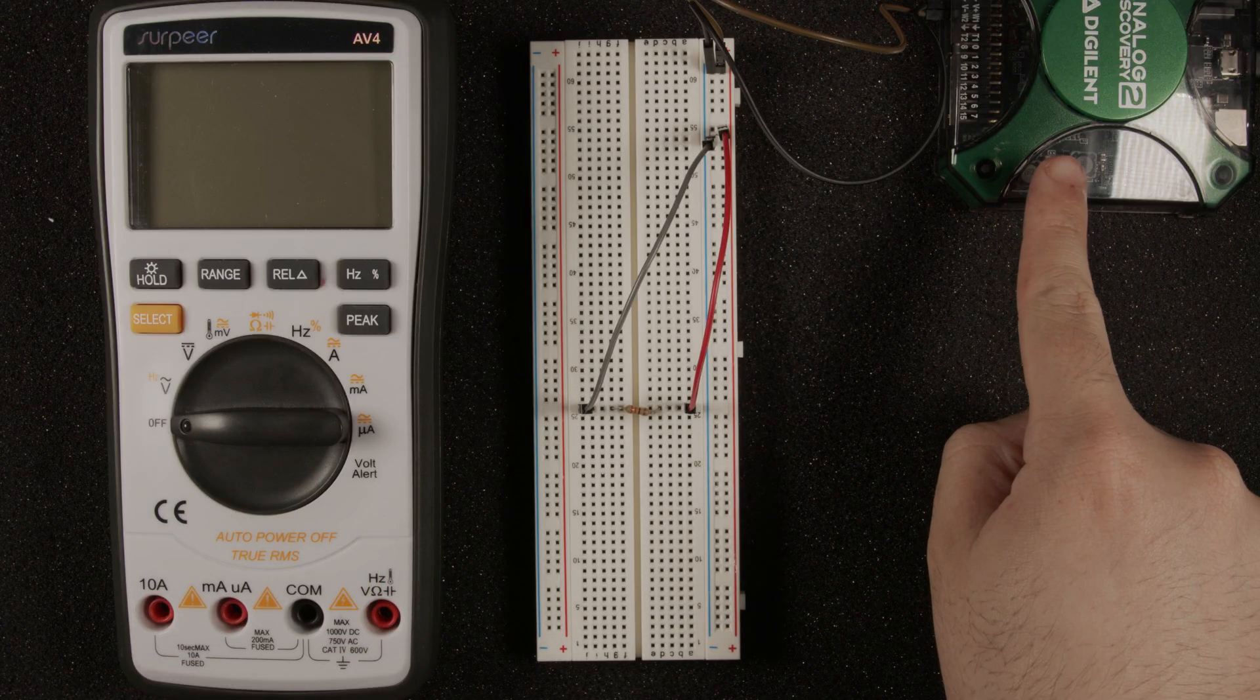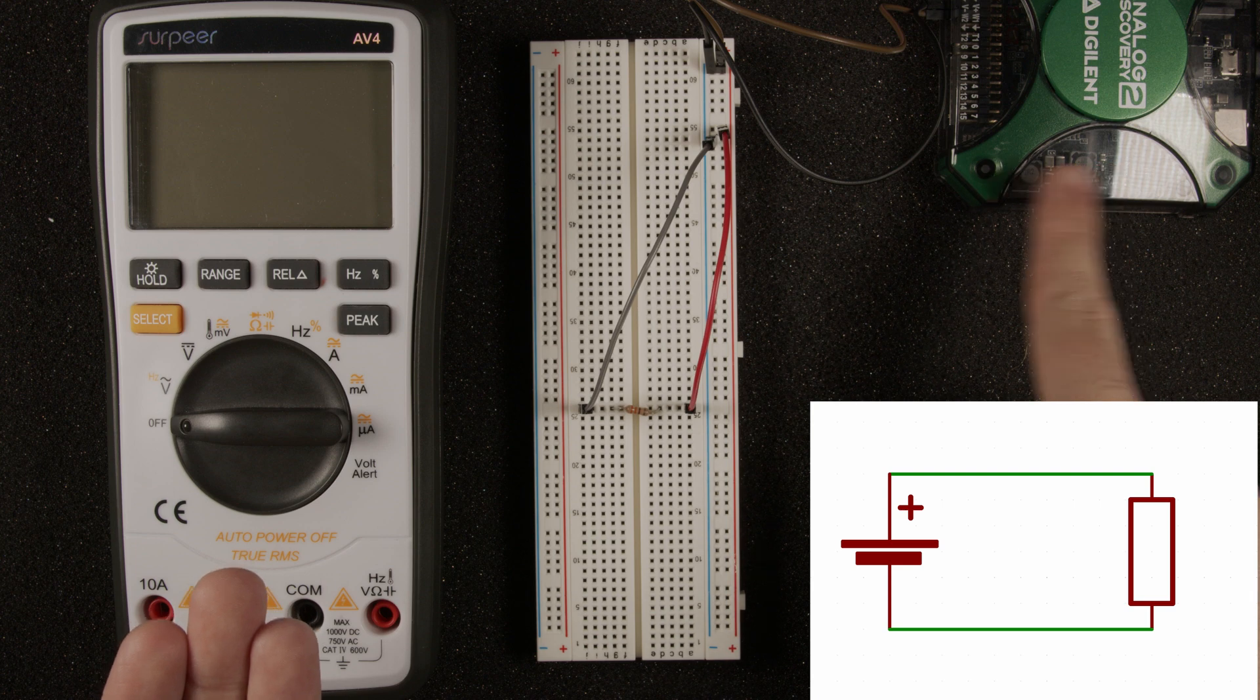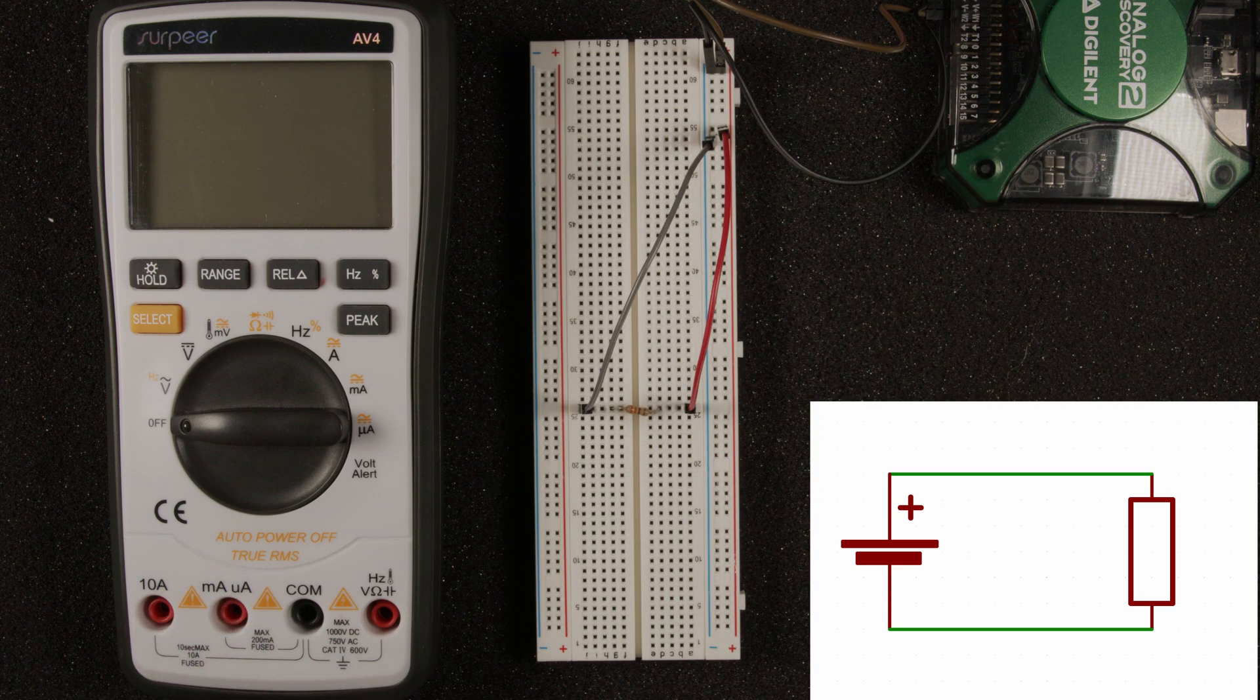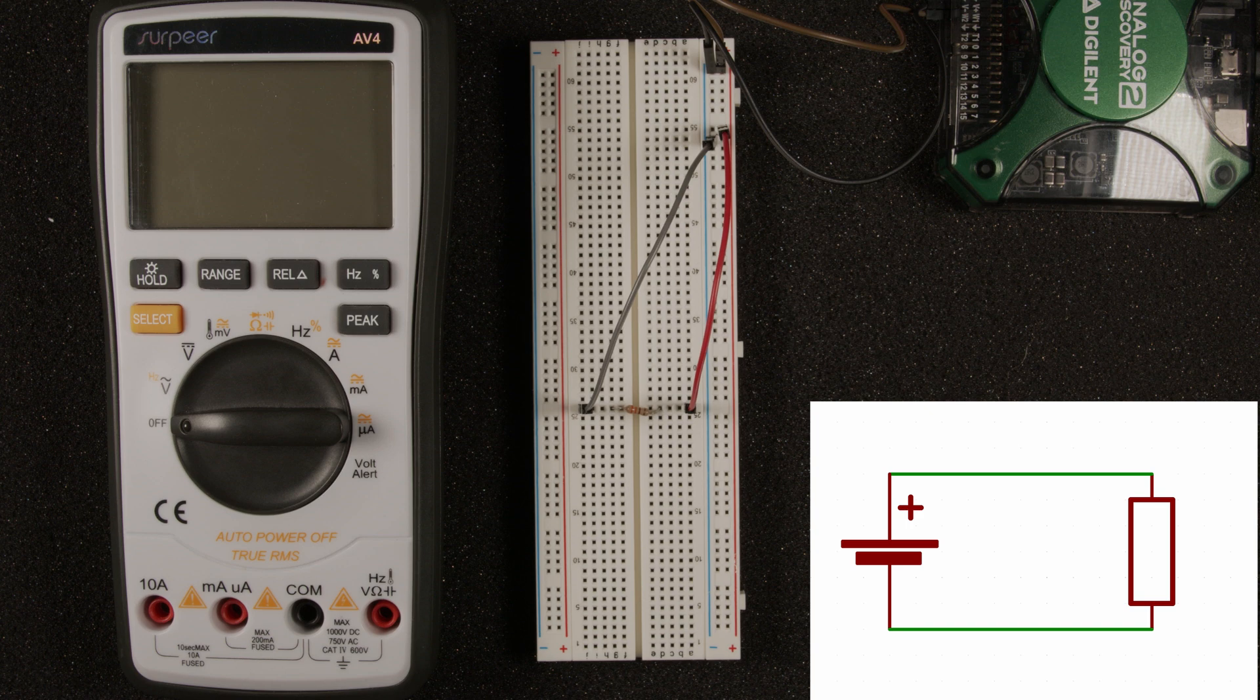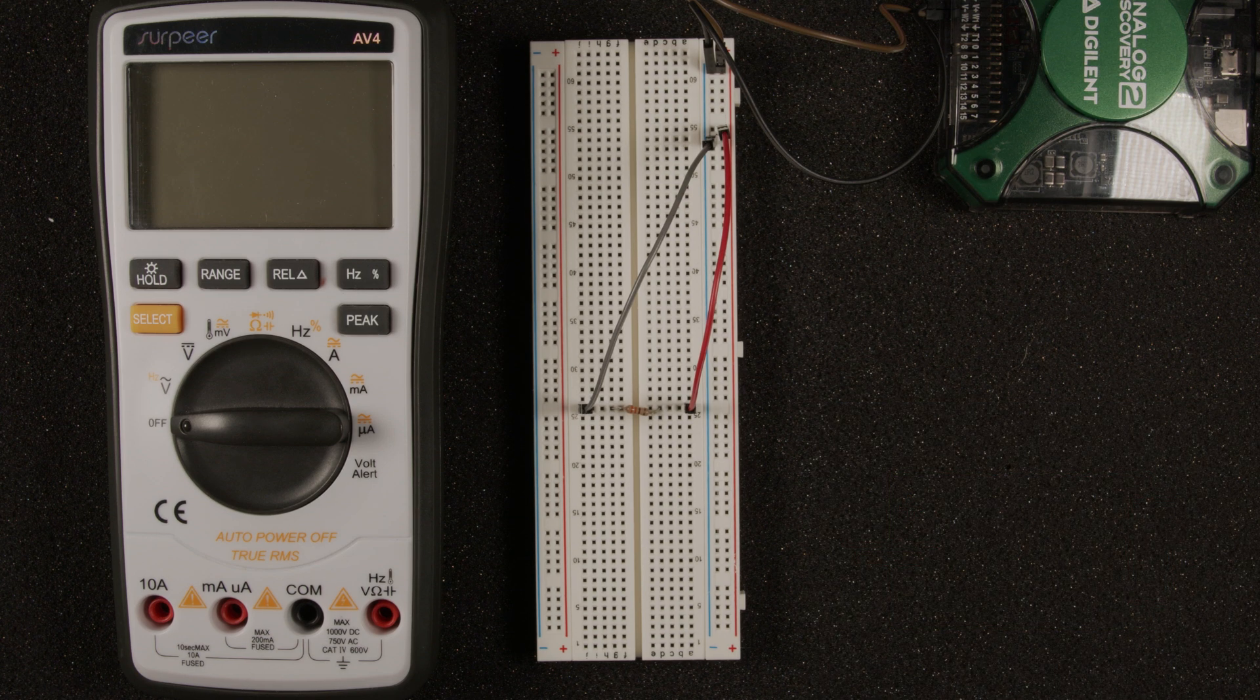First let's go ahead and learn how to measure a DC voltage. In this circuit I have a box here which is acting as the power supply, which is feeding a voltage across this resistor. Let's say that we want to measure this voltage.